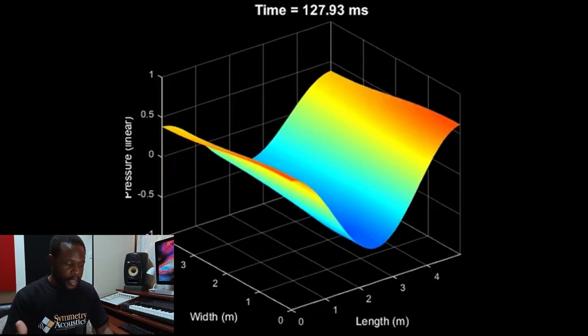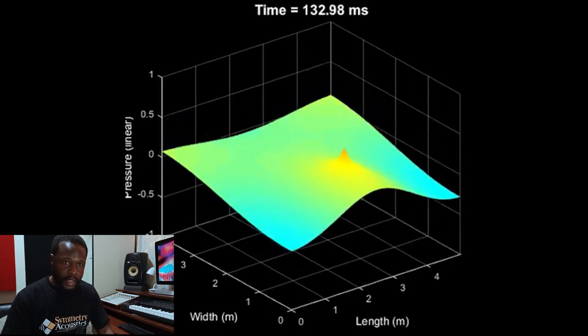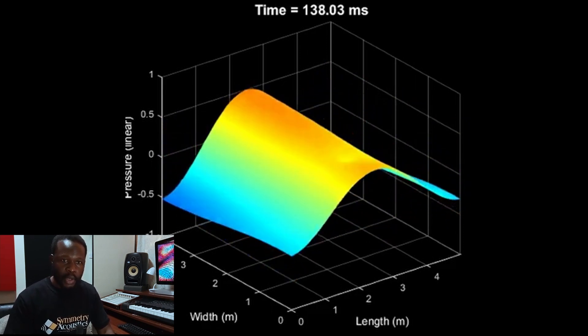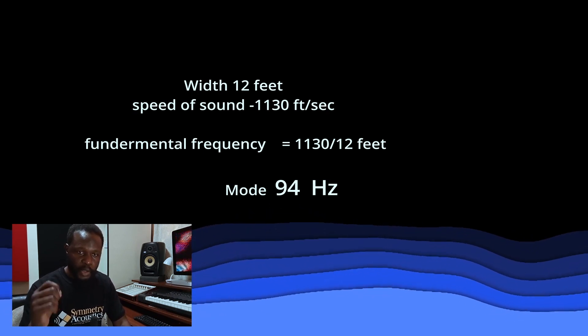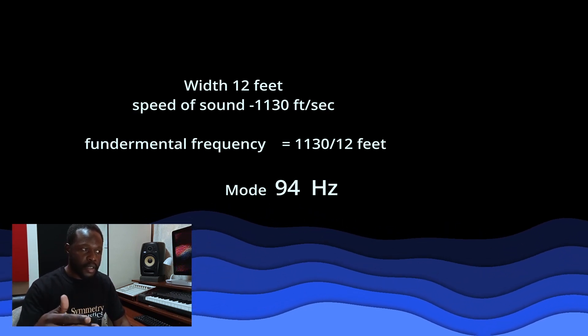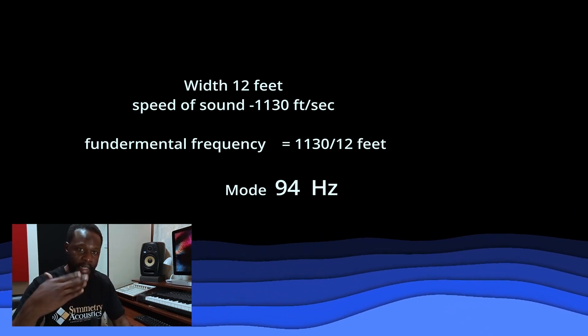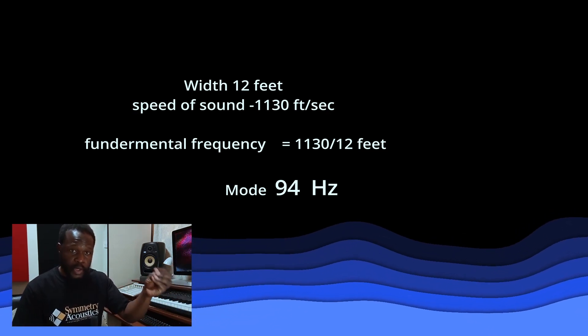The same calculation applies to the side walls. For a side wall of 12 feet, you take 1130 divided by 12 to find the fundamental frequency causing problems across that dimension. The same thing happens floor to ceiling. In most cases, floor-to-ceiling height is eight feet. If you calculate 1130 divided by 8, it comes out to around 70 Hz. So you also have room modes of about 70 Hz floor to ceiling.